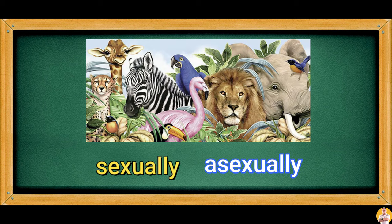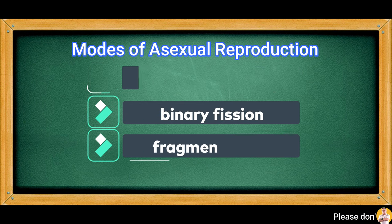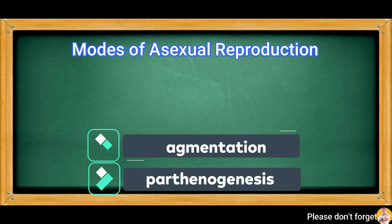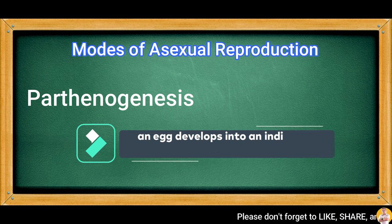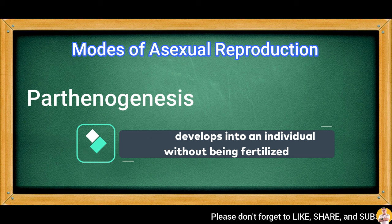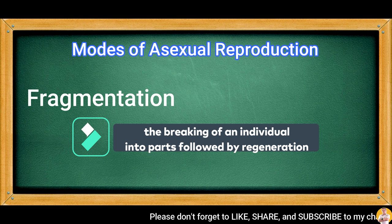In general, animals may reproduce sexually or asexually depending on the species. Higher species perform sexual reproduction while simpler species show asexual reproduction. The different modes of asexual reproduction are budding, binary fission, fragmentation, and parthenogenesis. Parthenogenesis is a form of asexual reproduction in which an egg develops into an individual without being fertilized. Fragmentation is the breaking of an individual into parts followed by regeneration.